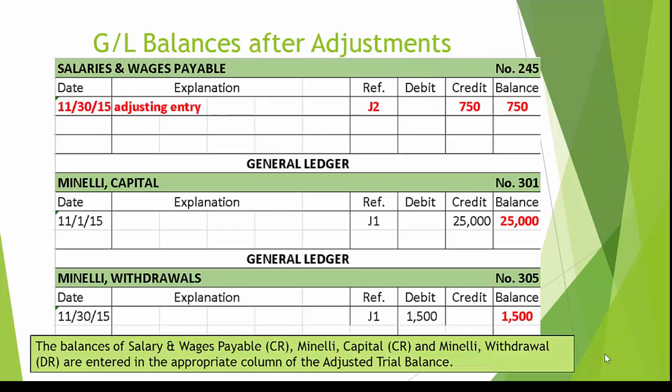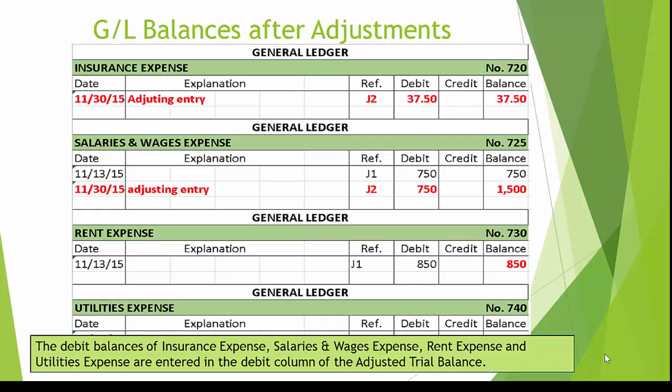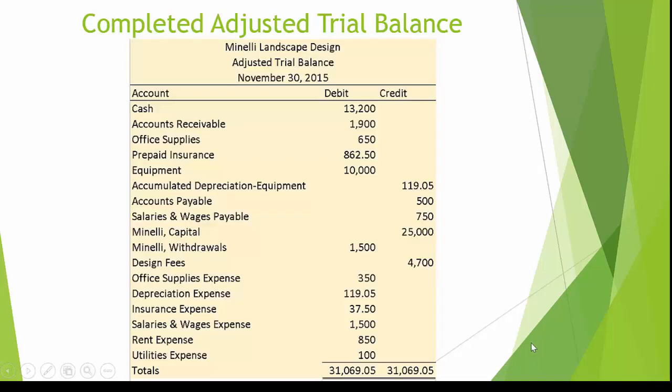The balance of salaries and wages payable, $750 credit; Minnelli capital, $25,000 credit; and Minnelli withdrawal, $1,500 debit, are entered in the appropriate column of the adjusted trial balance. The balance of design fees, $3,500 credit; office supplies expense, $3,500 debit; and depreciation expense, $1,190.05 debit, are also entered. The debit balances for insurance expense $3,750, salaries and wages expense $1,500, rent expense $850, and utility expense $100 are entered in the debit column of the adjusted trial balance. And here is the completed adjusted trial balance.